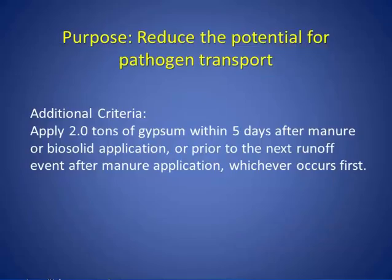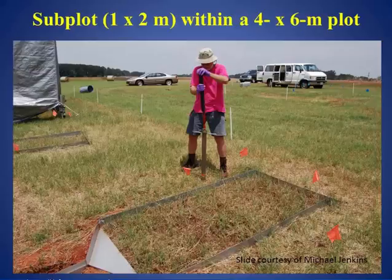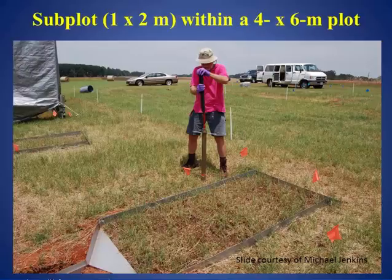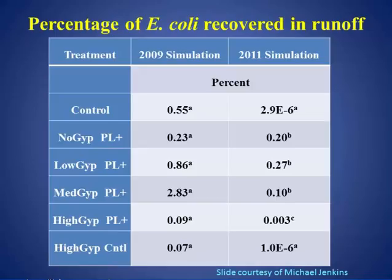Another part of the criteria is reducing pathogen transport. This recommendation is that you use two tons of gypsum per acre, also within five days of applying the manure, to reduce the losses of microbial components in the runoff. This is data collected at Watkinsville, Georgia, showing a significant reduction in the amount of E. coli recovered in the runoff when gypsum was used. A lot of this was due to a significant increase in water infiltration — they think that the first flush of water moved the microbes into the soil, contributing downstream to a lot of this benefit.